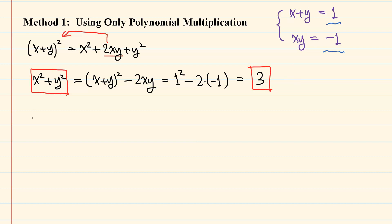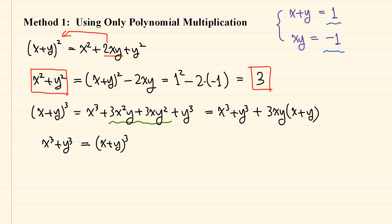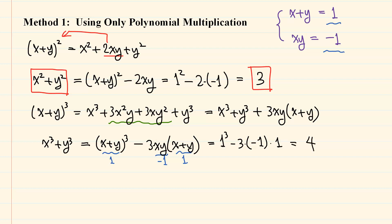For the sum of cubes, we use the formula x plus y cubed equals x cubed plus 3xy squared plus y cubed, which can be written as x cubed plus y cubed plus 3xy times x plus y. Therefore, x cubed plus y cubed equals x plus y cubed minus 3xy times x plus y. So we have 1 cubed minus 3 times minus 1 times 1, which is 4.